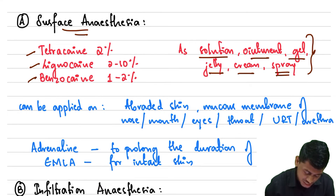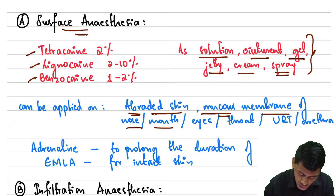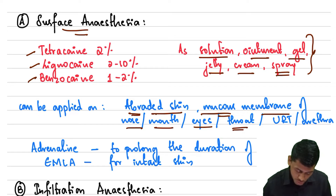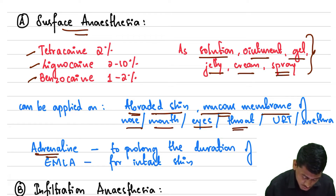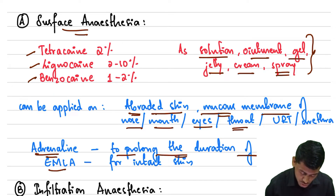Surface anesthesia can be applied on abraded skin and mucous membranes of the nose, mouth, eyes, throat, upper respiratory tract, as well as the urethra. We can also use adrenaline along with these local anesthetics to prolong the duration of action, and we can also use eutectic mixture of local anesthetics for intact skin.